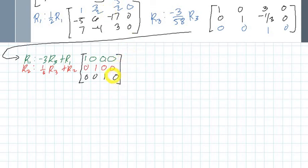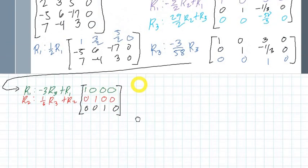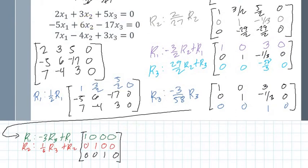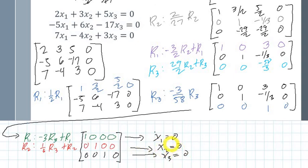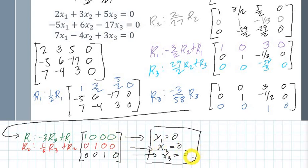Finally, we have the reduced row echelon form. Looking back at the equations, we can confirm that x₁ = 0, x₂ = 0, and x₃ = 0. Only the zero solution is possible here because we have a consistent and independent system. If it had been a consistent and dependent system, we would have gotten a parametric equation instead.